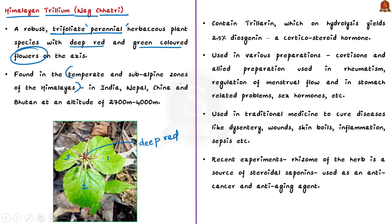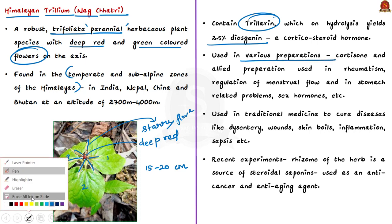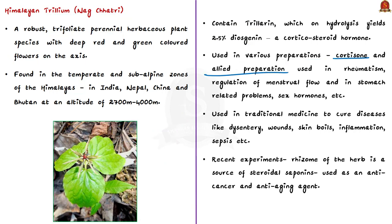This herb grows to a height of 15 to 20 centimeters with a purple-red stem, three green leaves just below the flower, and a single small starry flower which is deep red and green in color. The speciality is that the roots of this species contain trilarin, which on hydrolysis gives 2.5 percent diosgenin — a corticosteroid hormone. This corticosteroid hormone isolated from this plant is used in various preparations such as cortisone and allied preparations used in disorders related to joints, connective tissues, or rheumatism, and also in the regulation of menstrual flow, stomach-related problems, and sex hormones.